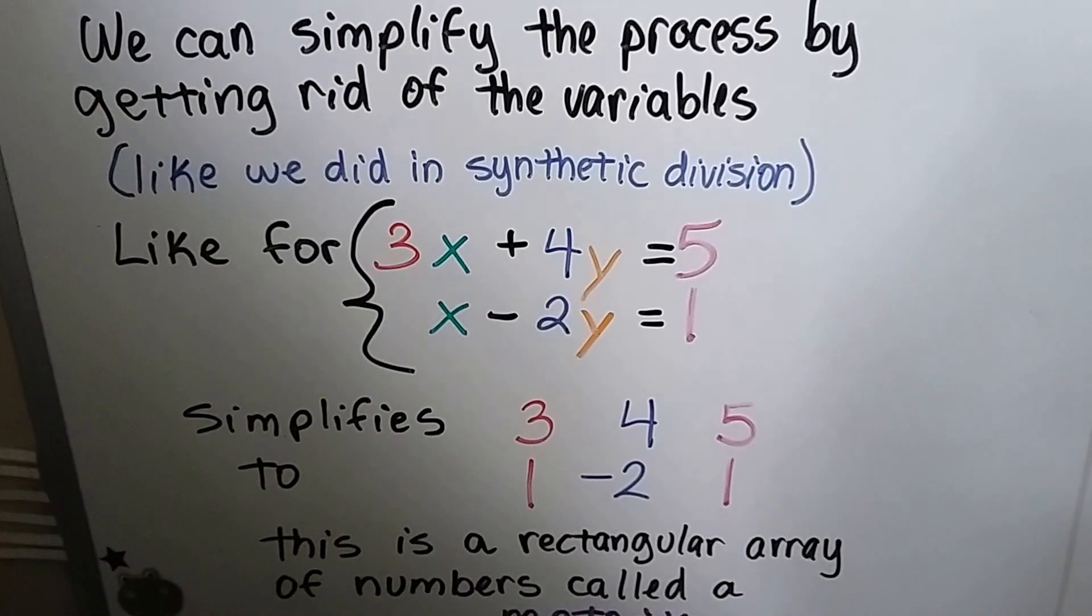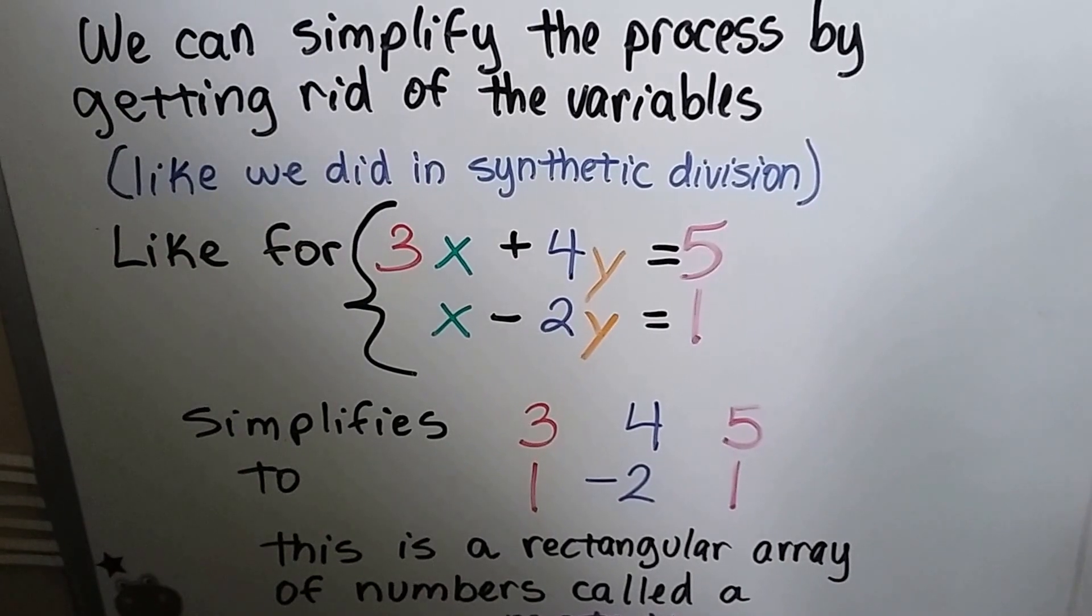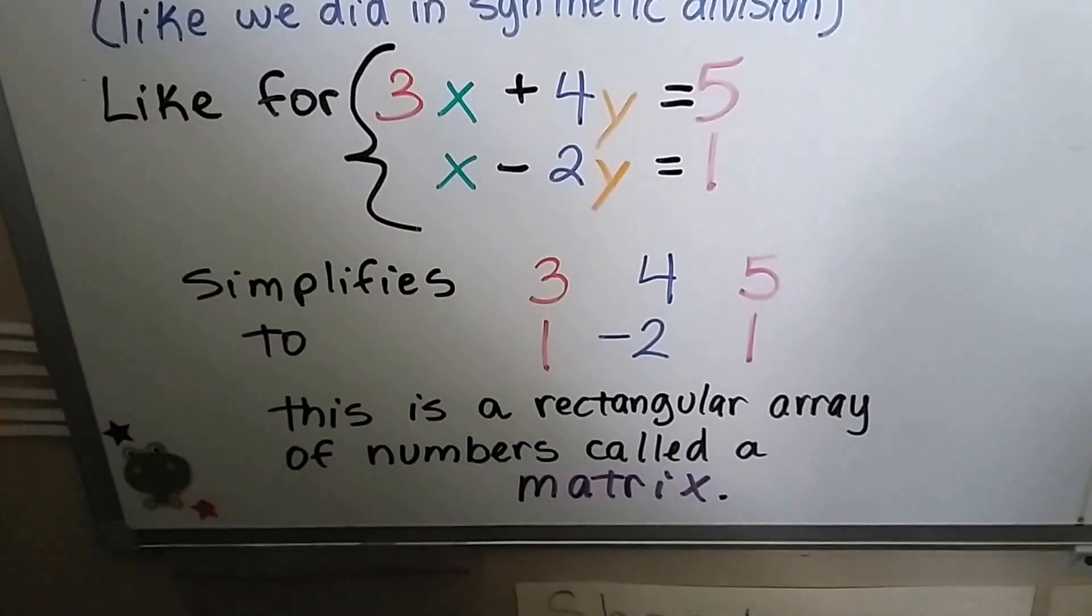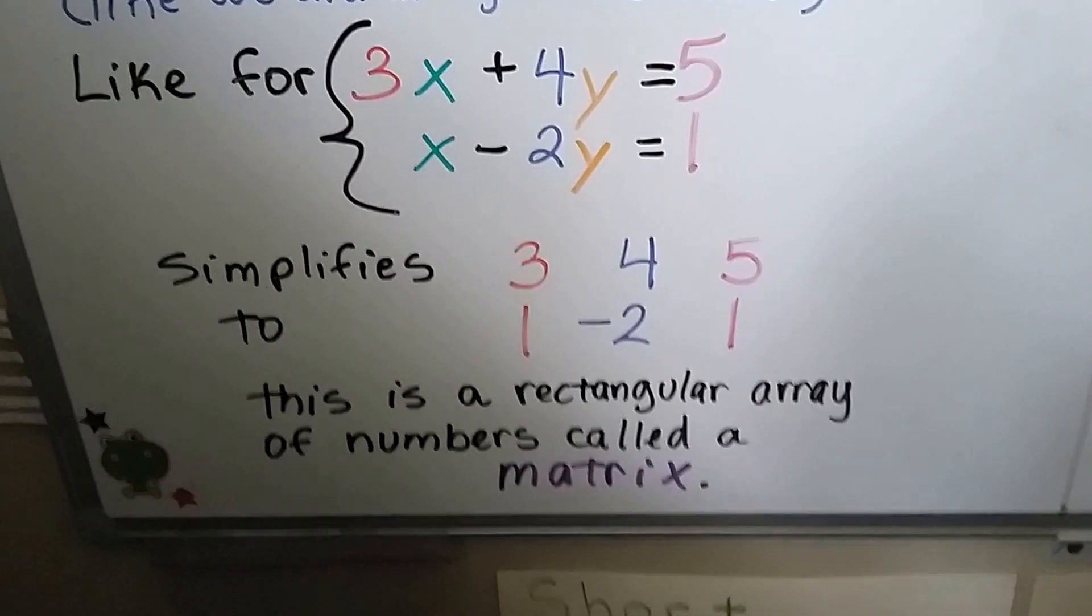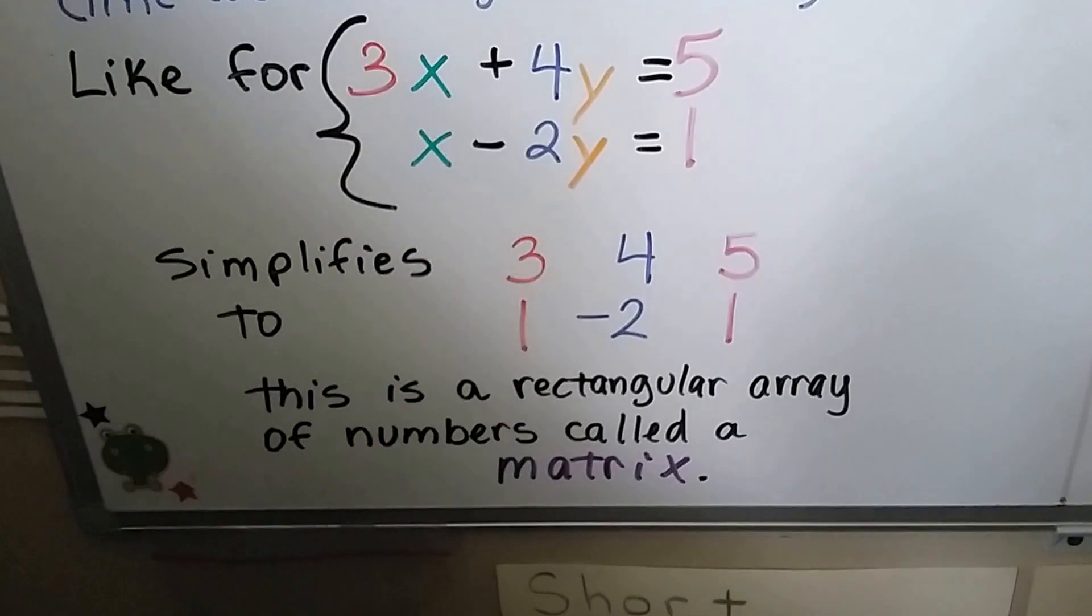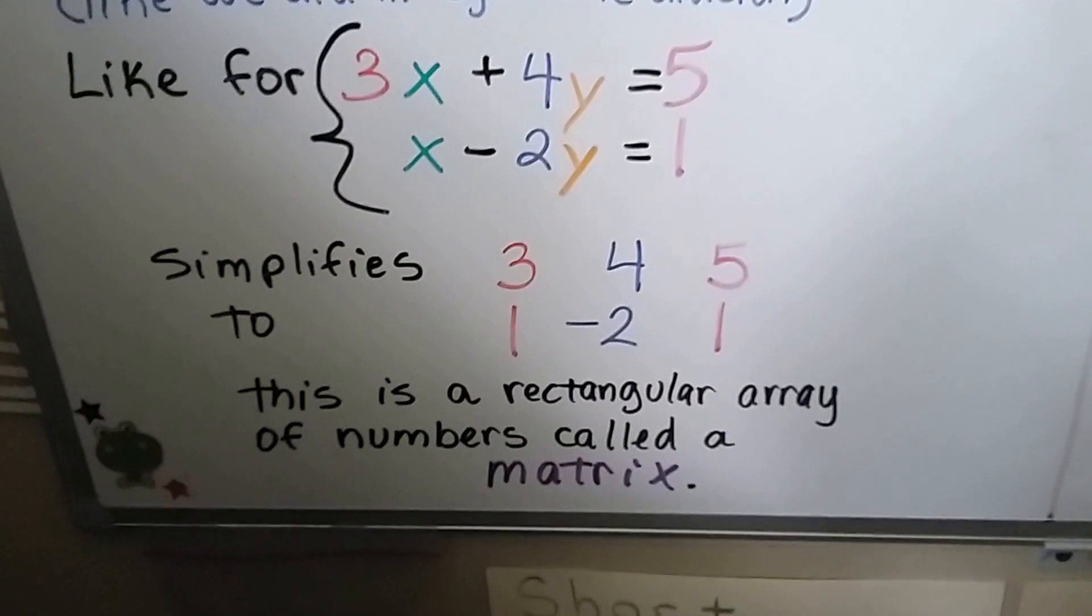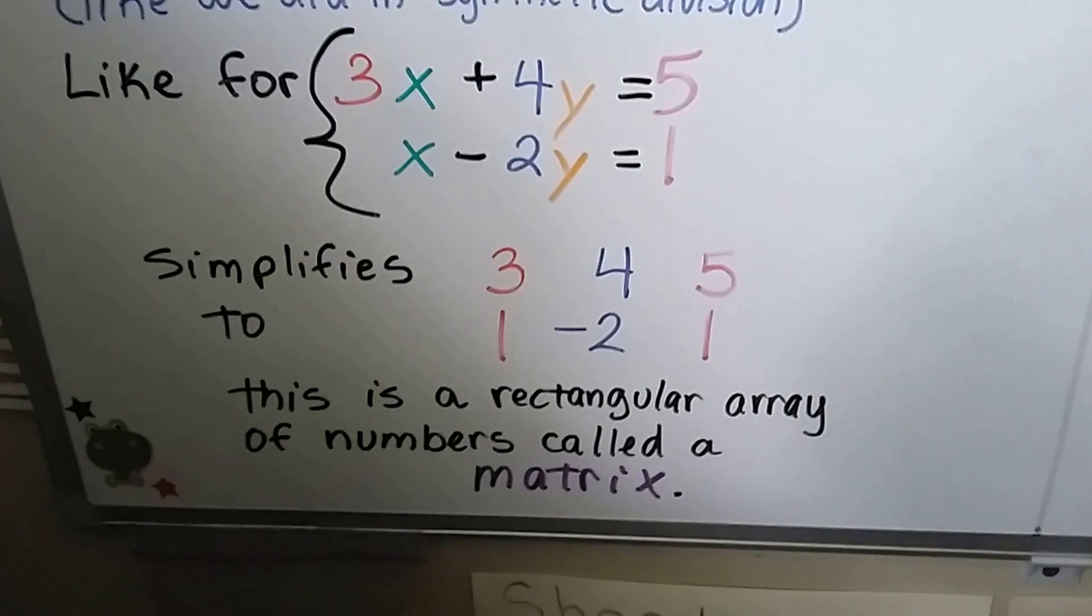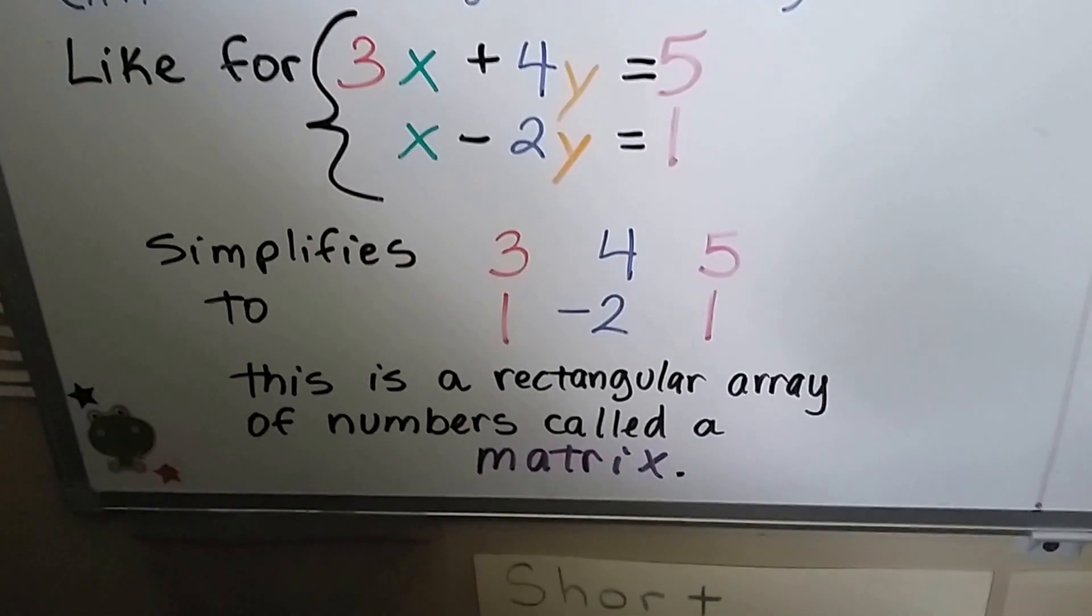We have the system 3x + 4y = 5 and x - 2y = 1. If we pull out all the variables, it will simplify to 3, 4, 5 and 1, -2, 1. Remember, in front of that x down here, there's an invisible 1, right? And this is a rectangular array of numbers called a matrix.